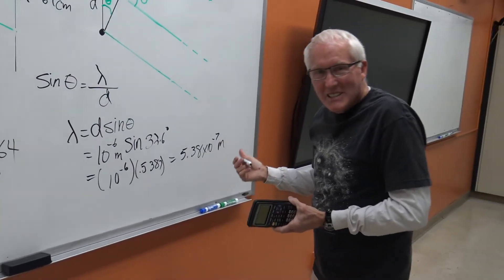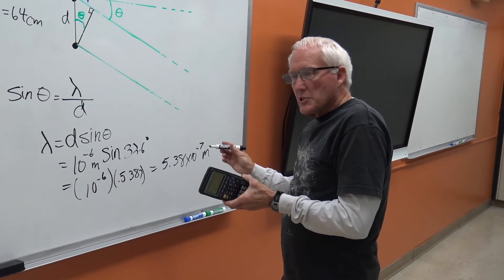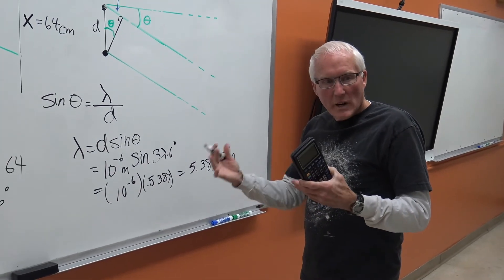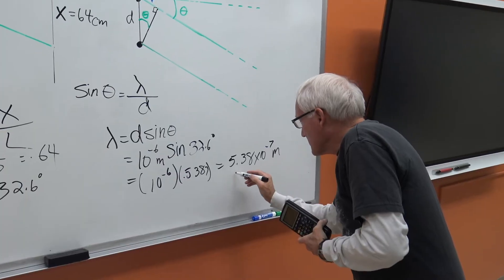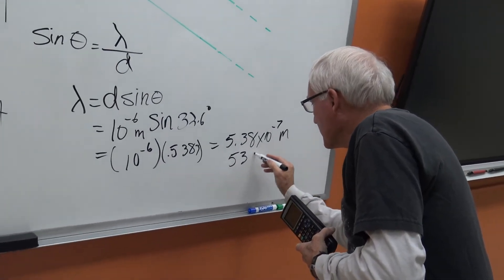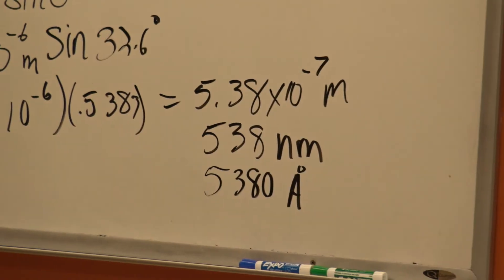Scientists like meters. But we could also write it in another unit that some people are familiar with called nanometers. When you deal with wavelengths of light that humans see, visible light, this is going to be 538 nanometers.